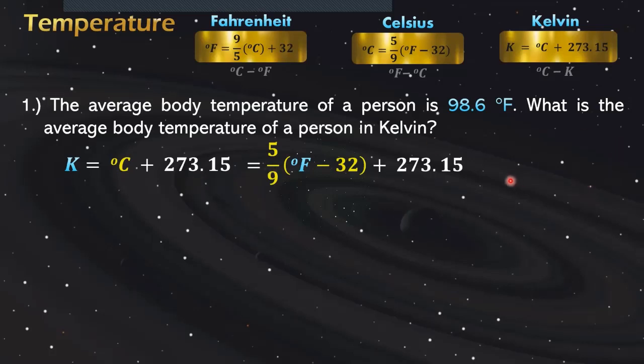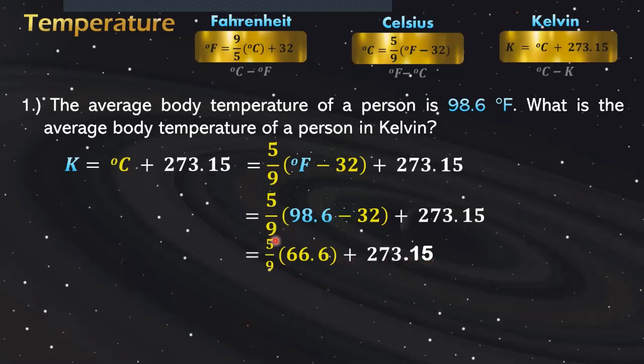Substitute the given, which is 98.6 degrees Fahrenheit. Simplify and get the difference: 5 over 9 times 66.6 plus 273.15. The answer is 310.15 Kelvin. If you're not comfortable using this process, you can convert this one first into degrees Celsius and then use this formula. It's okay as long as we have the same answer.